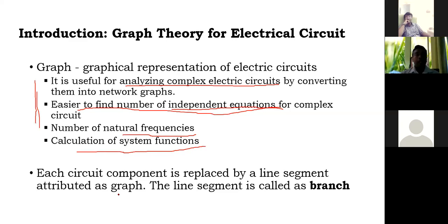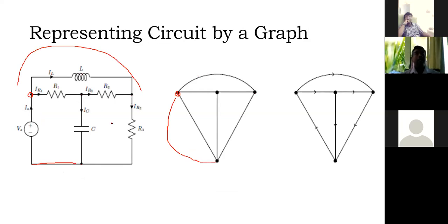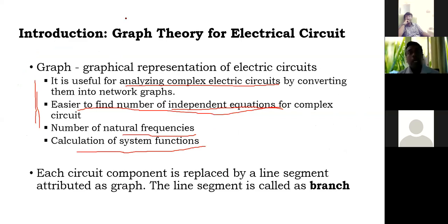Now I have already said, each circuit component is replaced by a line segment. Now earlier I have shown that you have a circuit component, so these are the L, R and C, these are the circuit components, so these components I have replaced by a straight line. I have not mentioned anything on the straight line, I have just replaced by a straight line, so this straight line is called the branch. So is it clear what is branch? So in a circuit we replace this component by a line. Now this is called a branch. Now a branch is connected to the nodes.